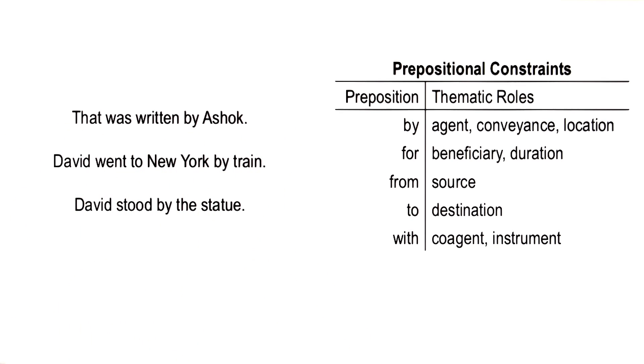Actually, this particular sentence was written by David. The second sentence, David went to New York by train. Here, by is pointing to a conveyance.